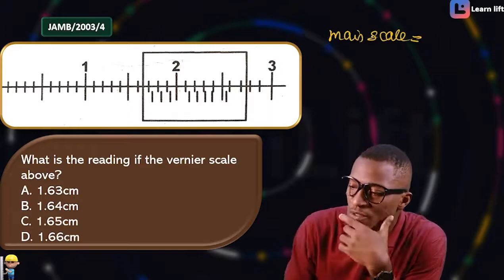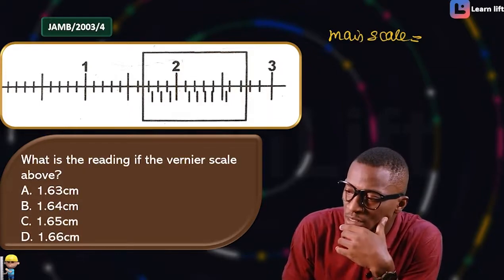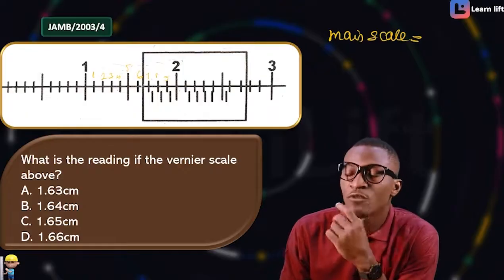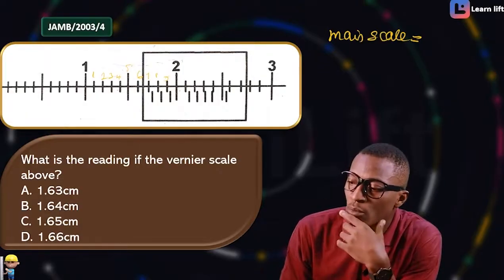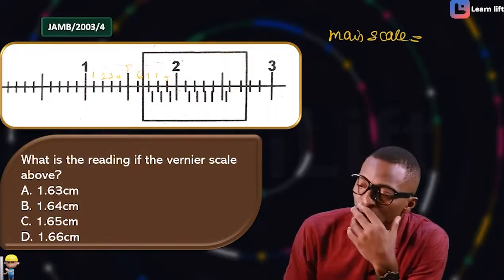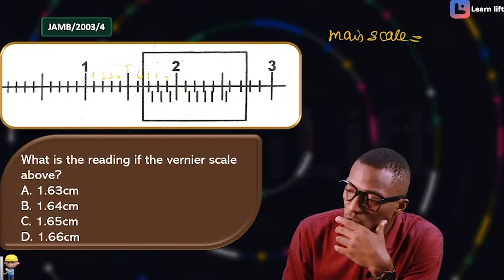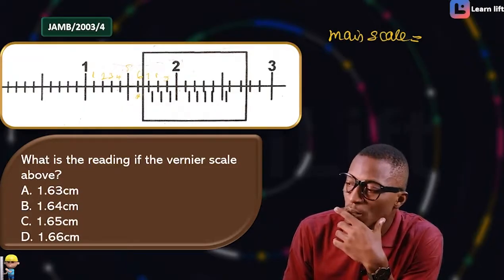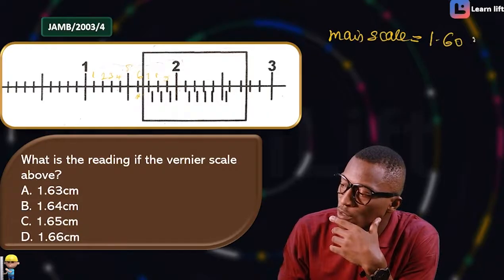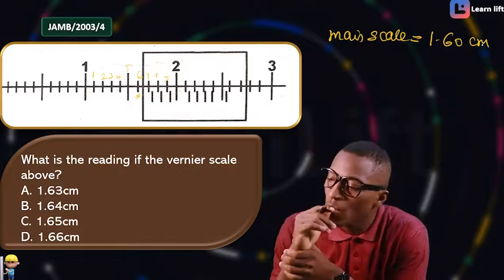Counting the main scale: 1, 2, 3, 4, 5, 6, 7, 8, 9, 10. Each division is 0.1, so we have 1.1, 1.2, 1.3, 1.4, 1.5, 1.6, 1.7, 1.8, 1.9, 2. The zero of the vernier scale sits at a certain line, so we pick the one before it — that is 1.6. Main scale reading is 1.60 cm.